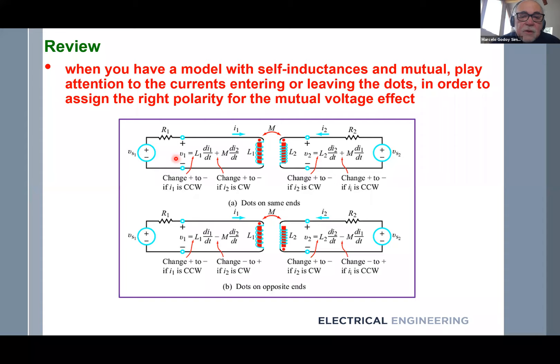When you write your KVL, you go along the mesh, writing voltage drops and the voltage source. Then you account for your self-inductance, and then you determine whether the mutual contribution is positive or negative. That is the correct way to assign the right polarity for the mutual voltage effect.